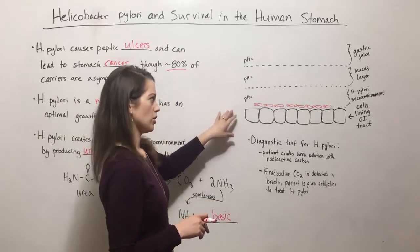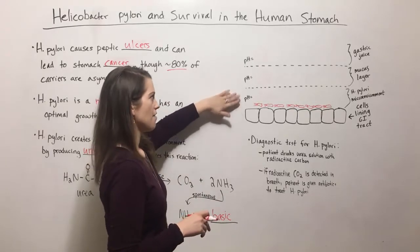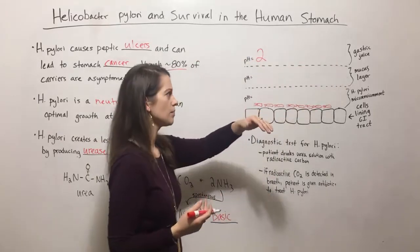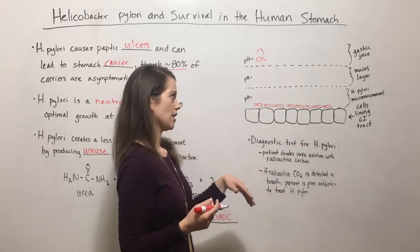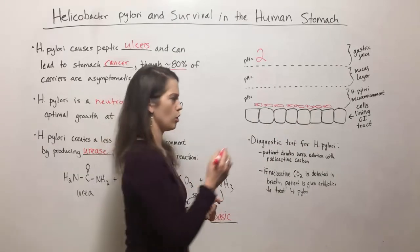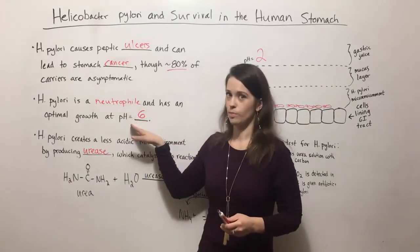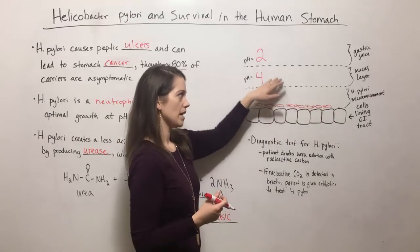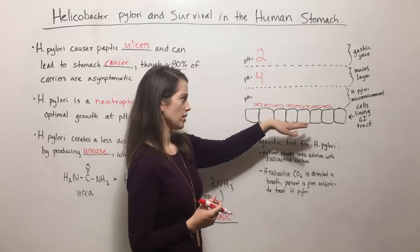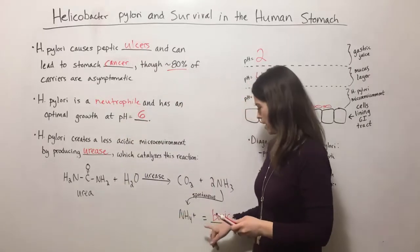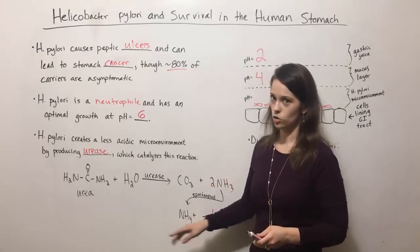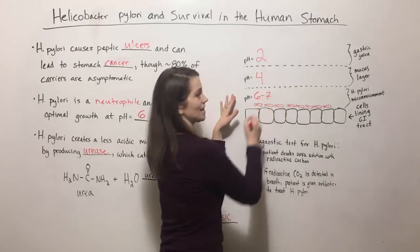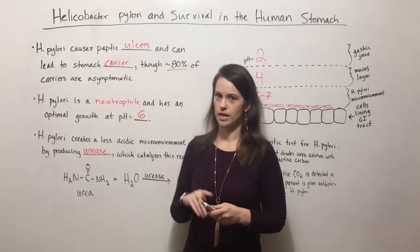So here we have the cells lining the GI tract and then we have three different zones. The zone up top is a pH close to 2 — this is where the gastric juice or stomach acid is. Then there's a mucus layer on top of the cells lining the GI tract, and the mucus layer has a pH closer to 4. That's still quite a bit lower than the optimum pH of 6. So what does Helicobacter pylori do? It inhabits this zone in the mucus layer really close to the cells that line the GI tract. Each of these cells is pumping out ammonia that gets converted immediately to ammonium ions, which raises the pH a bit. So the pH of this layer is more like 6 to 7 — right in that optimal growth range for Helicobacter pylori.